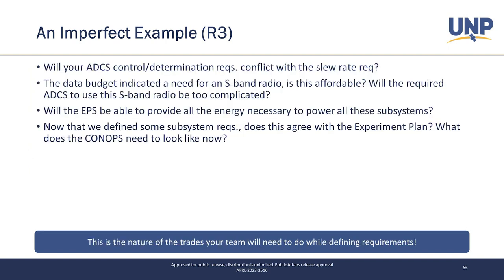A few other things to think about in this case: will our control and determination requirements conflict with the slew rate requirements? We indicated the need from the data budget for an S-band radio, which drove us to the ADCS requirements, but maybe that creates other issues with costs or frequency licensing. EPS obviously has to be able to power everything. And then taking it all together and flowing it back up — does it actually meet what our system has to do? Do the ConOps and experiment plan do what they're supposed to? These are all trades to consider as you go through this.